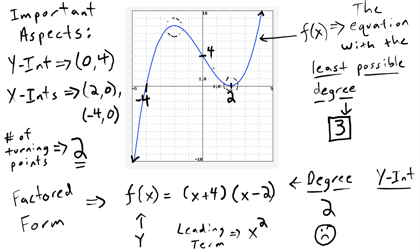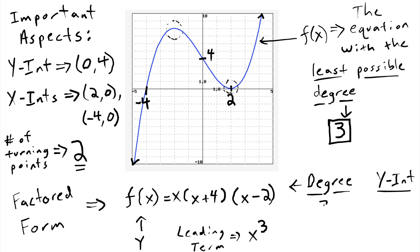There's no way this function can look like this blue line with degree two, so we need another x. Some people would like to just add another x out in front, and it's true that this would make the leading term be x to the third, giving degree three. But this adds another x-intercept at zero, and this function doesn't have an x-intercept at zero. So it turns out that one of these factors is going to have what we call a multiplicity greater than one.